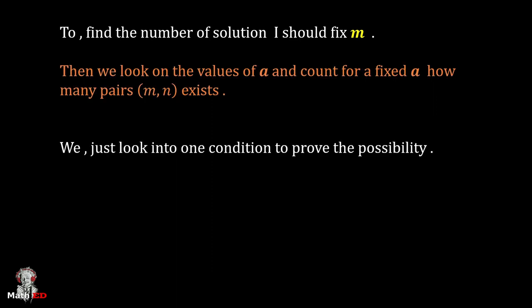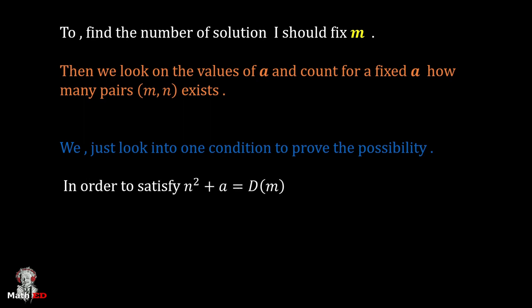Now we just look into one condition to prove the possibility. In order to satisfy n² + a = D(m), we can see that n² will be less than or equal to D(m), or n should be less than or equal to floor(√D(m)).